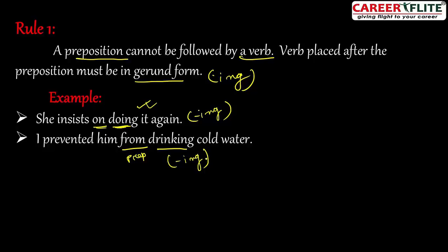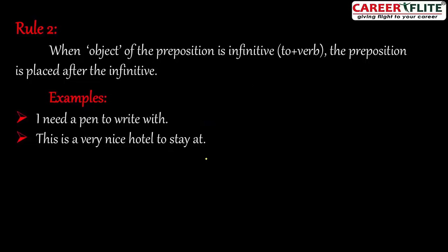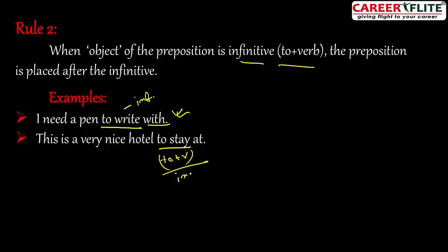Rule number two: when the object of the preposition is in infinitive form. An infinitive is 'to + verb'. In this case, the preposition is placed after the infinitive. For example: 'I need a pen to write with.' Here, 'to write' is the infinitive, so the preposition 'with' is placed after it. Another example: 'This is a very nice hotel to stay at.' Here, 'to stay' is the infinitive, so the preposition 'at' is placed after it.